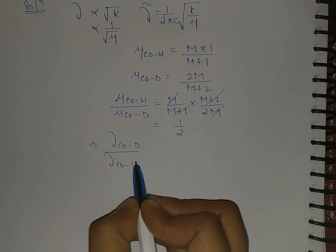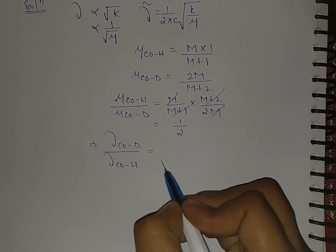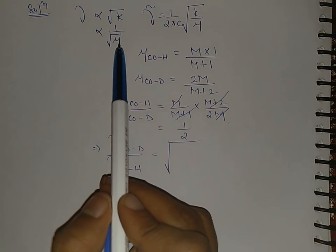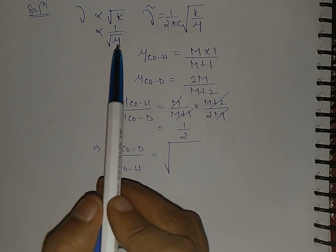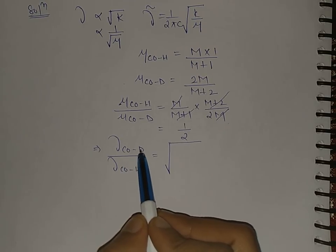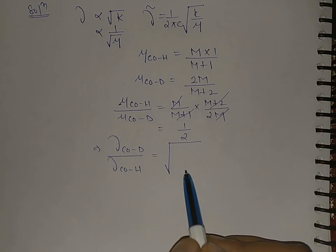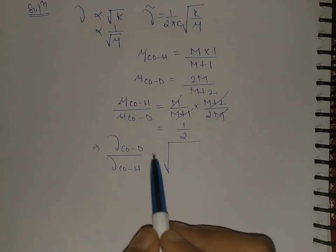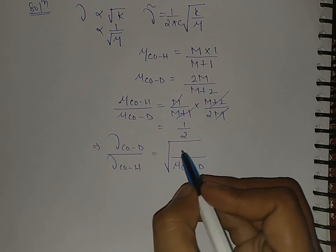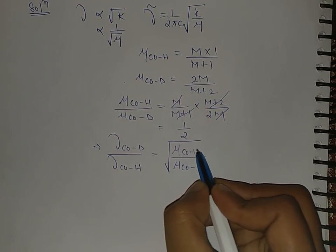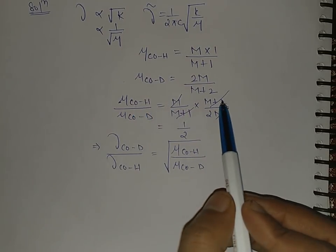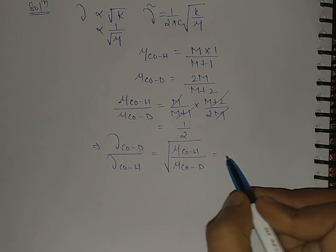Now let me adjust the angle. This is 1 by 2. Now the frequency of deuterium divided by frequency of cobalt and hydrogen, this will be root of, as I told you earlier, this varies inversely with the root of reduced mass. So this is cobalt deuterium, so the reduced mass will be in the denominator because it varies inversely. So this is cobalt deuterium and this is reduced mass of cobalt hydrogen bond.